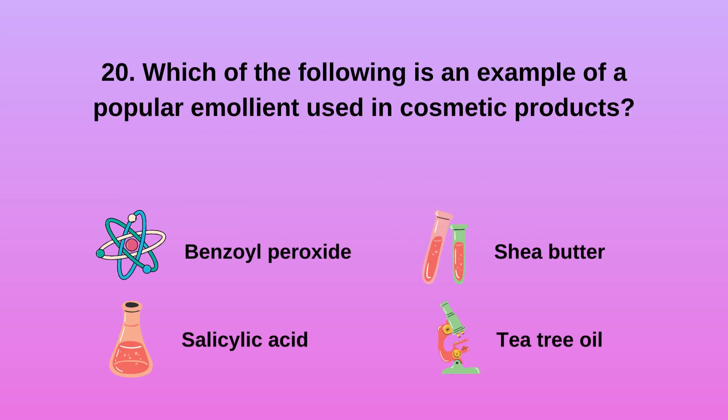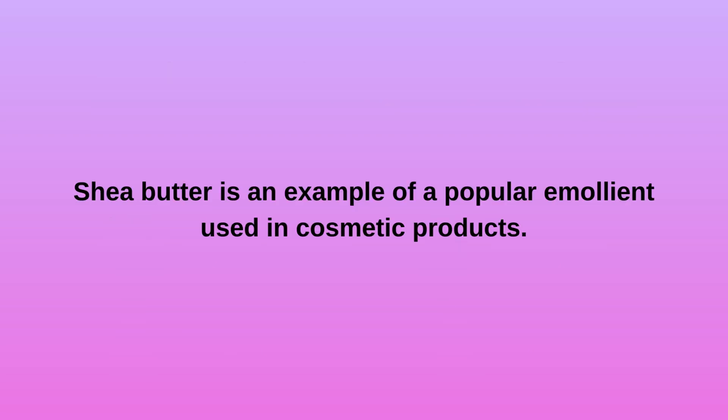22. Which of the following is an example of a popular emollient used in cosmetic products? A. Benzoyl peroxide. B. Salicylic acid. C. Shea butter. D. Tea tree oil. Shea butter is an example of a popular emollient used in cosmetic products.